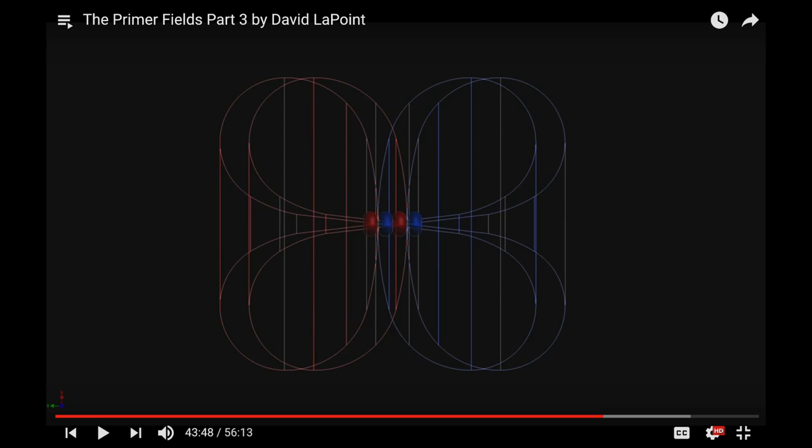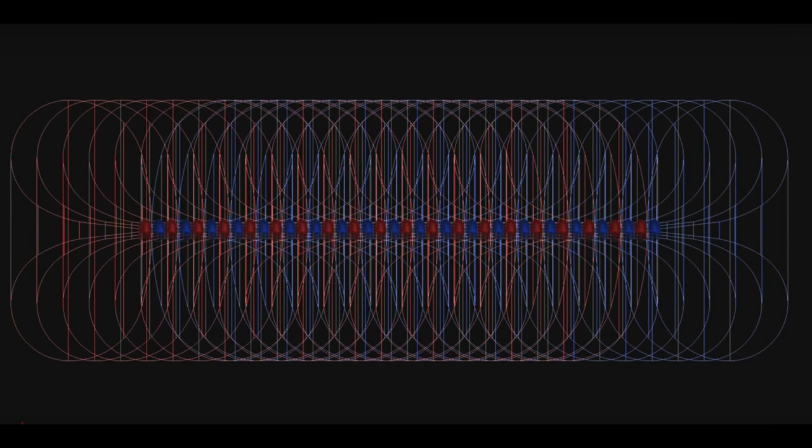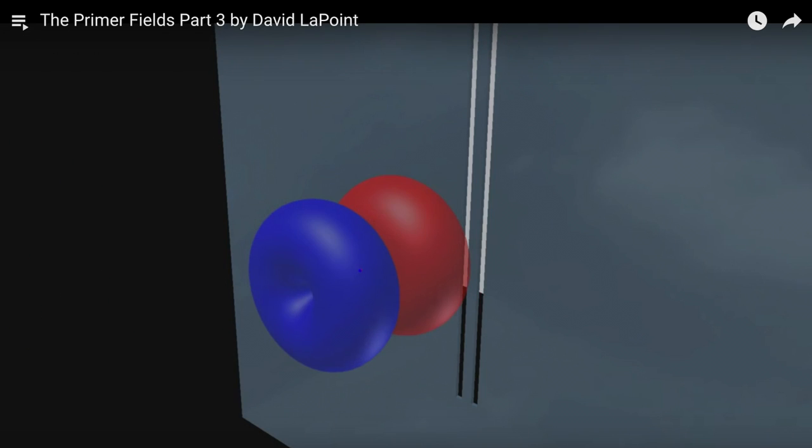So here blue and red is the actual photon and the gray lines are the extended fields. And we have a stream of photons, such as in a photon cannon or a laser. Then you have all these fields building up on each other and creating that line that you can see with the naked eye.